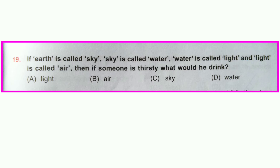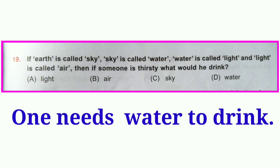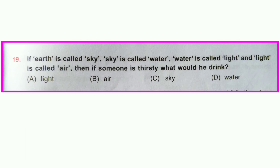Question number nineteen: If earth is called sky, sky is called water, water is called light, and light is called air, then if someone is thirsty, what would they drink? One needs water to drink when thirsty. But here, water is called light — it means light indicates water. Option A is correct: light.